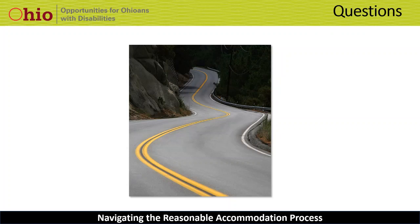Q&A: Is there a monetary value that would indicate an undue hardship? The EEOC guidance offers a list of criteria for establishing if something is reasonable or causes an undue hardship, and each employer should go through an assessment with each request. Each employer is unique, and the determination of cost and undue hardship is based on several factors: the size of the employer, how many locations and employees you have, and similar considerations. There is not just one monetary number for employers to go by — it is a case-by-case assessment each time.